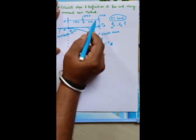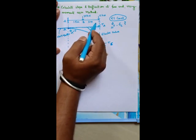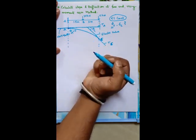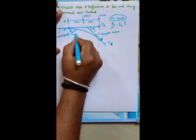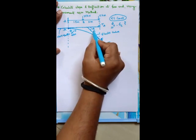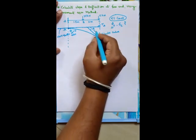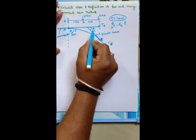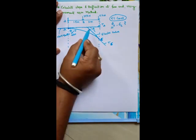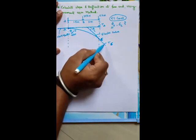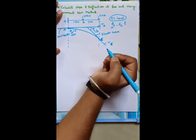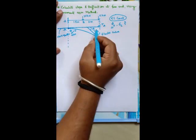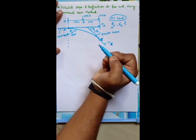In a cantilever beam, the slope is maximum at the free end and deflection is also maximum at the free end. Keep this in mind. The angle theta_C is read as the angle made by the tangent at C with respect to the tangent drawn at A.